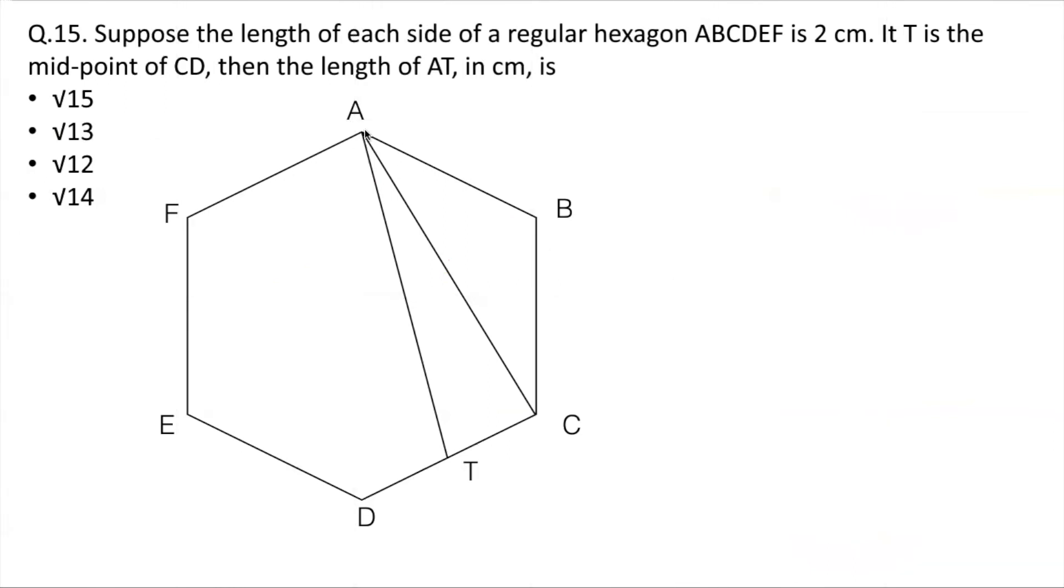So we only consider the length AC here in this case. Since T is the midpoint of CD, CT is definitely equal to 1 unit. Now we saw that this angle is 120 degrees from the previous logic and AB and BC are the equal sides. So angle BAC is same as angle BCA. Basically it's an isosceles triangle. So if AB and BC are two units, AC will be 2 root 3.